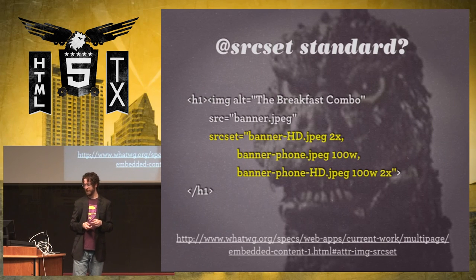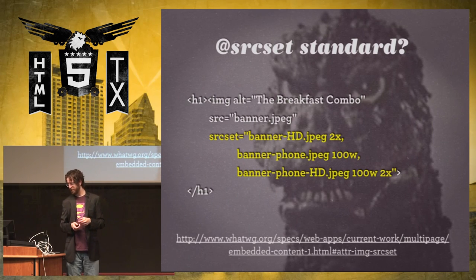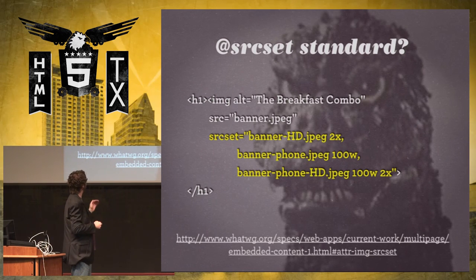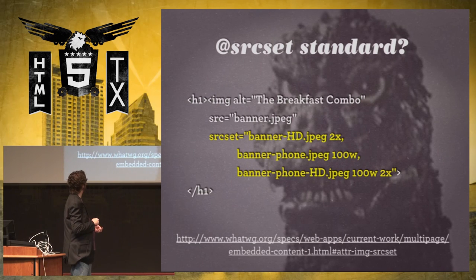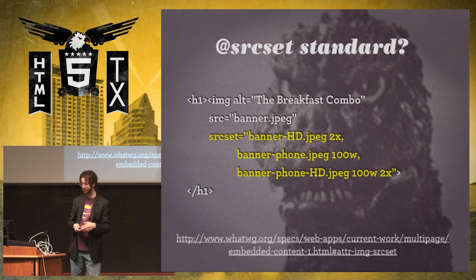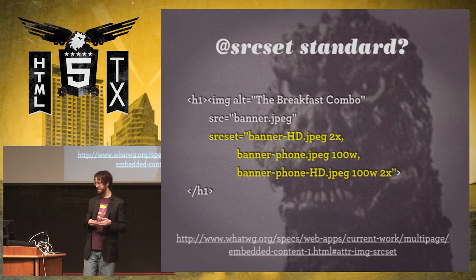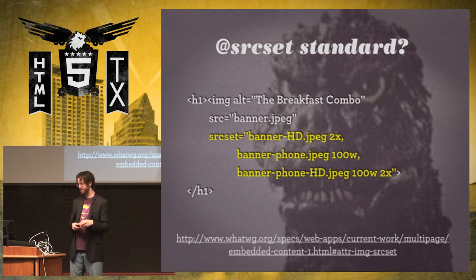Another solution is the source set attribute on the image element. You specify: if you want an HD image for a device with retina or 2x pixel density, here's this image; if you want a 100-pixel-width phone image, here's another; or a high-definition 100-pixel-width phone image with retina. This was proposed but there isn't a widely adopted polyfill yet — it's not as popular as the picture element approach.